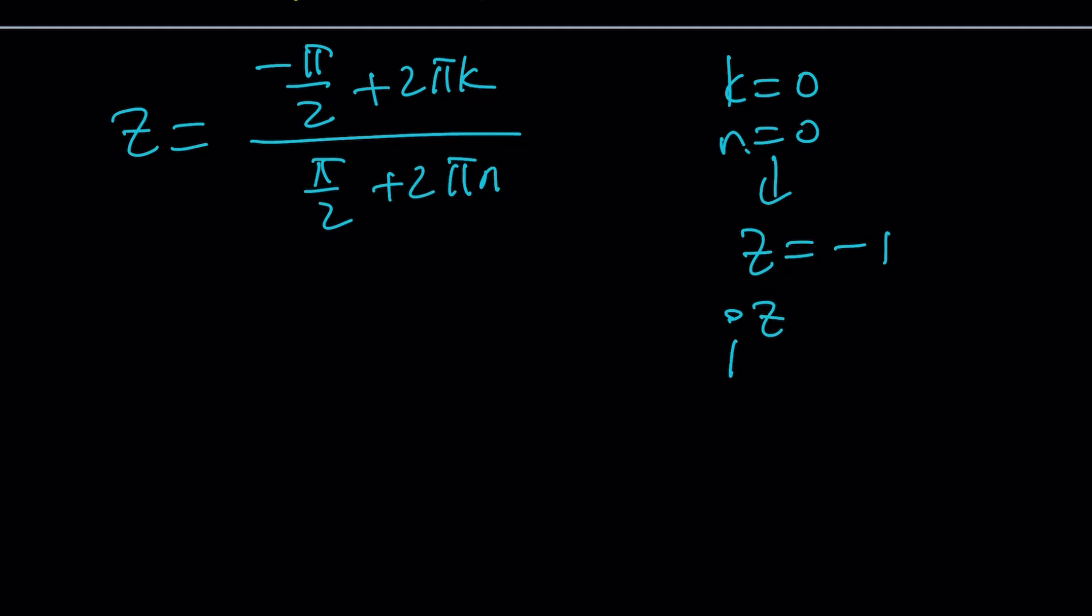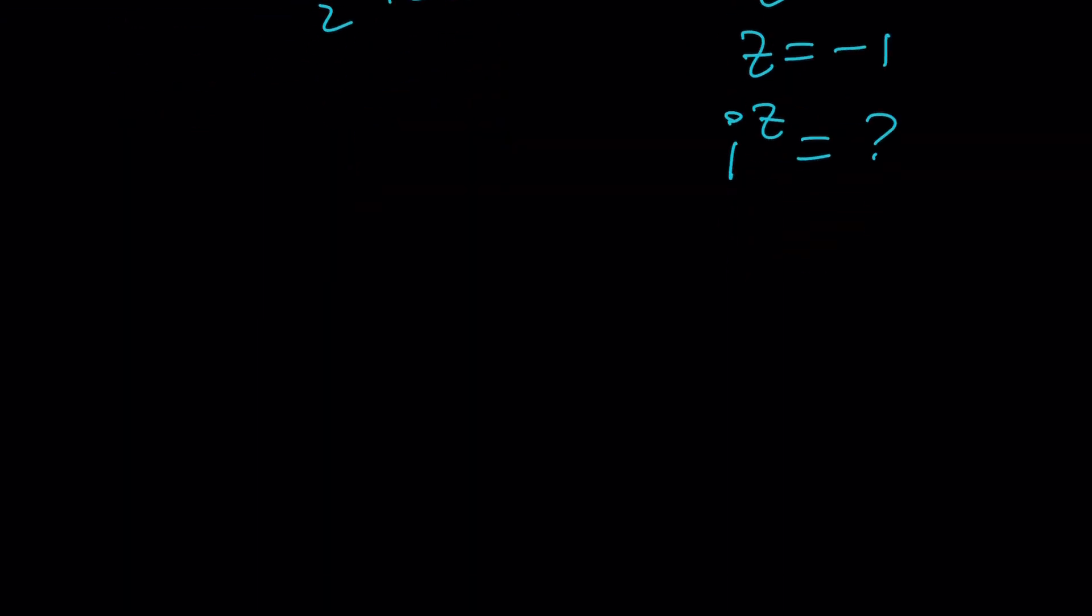i to the power of z equals what? We don't know. z is negative 1. i to the power of negative 1 is 1 over i. But you have to multiply by the conjugate, which is not i, by the way. It's negative i. That will be negative i squared, which is 1. And that will give you negative i. Yay! We got a solution. z equals negative 1 is definitely a solution.